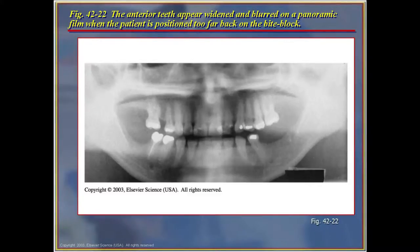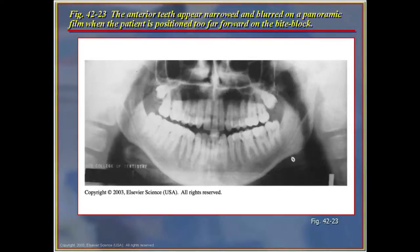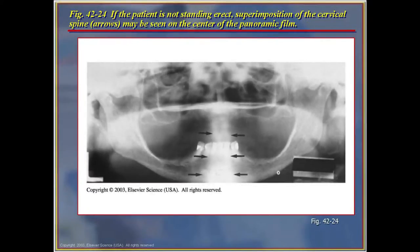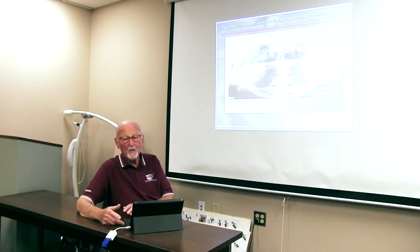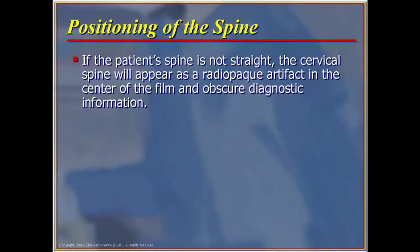If the patient is positioned too far back in the bite field or too far forward, the film will be blurred and distorted. If the patient is not standing erect, the upper and lower jaws may be missed and more of the maxillary sinuses will appear. If the patient's spine is not straight, the cervical spine will appear as a radiographic artifact in the center of the film, obscuring diagnostic information. Patients must also drop their shoulders back to normal position, as raised shoulders change the entire view.